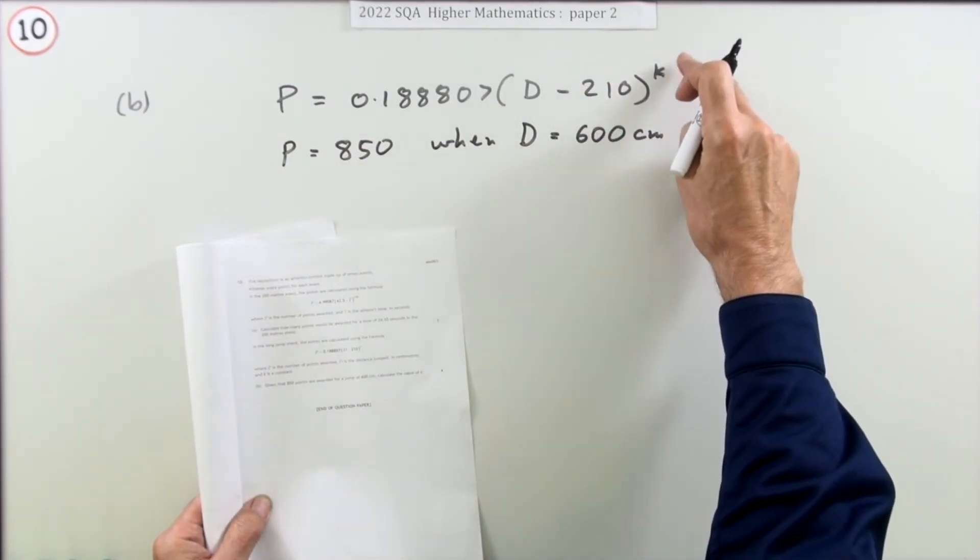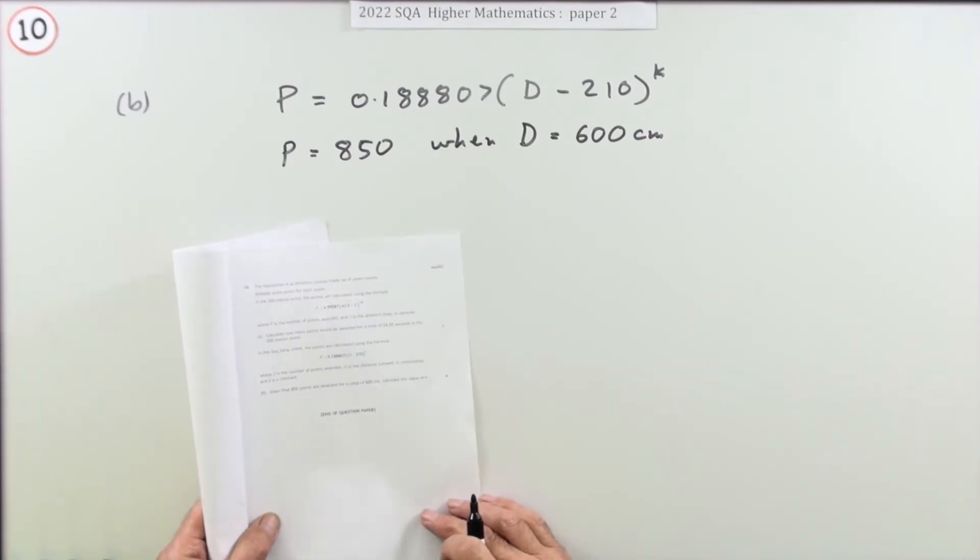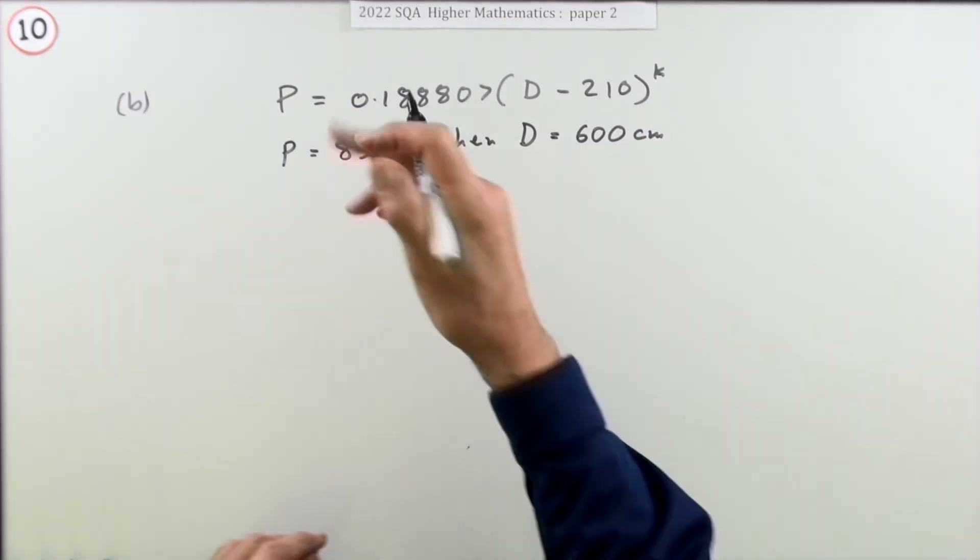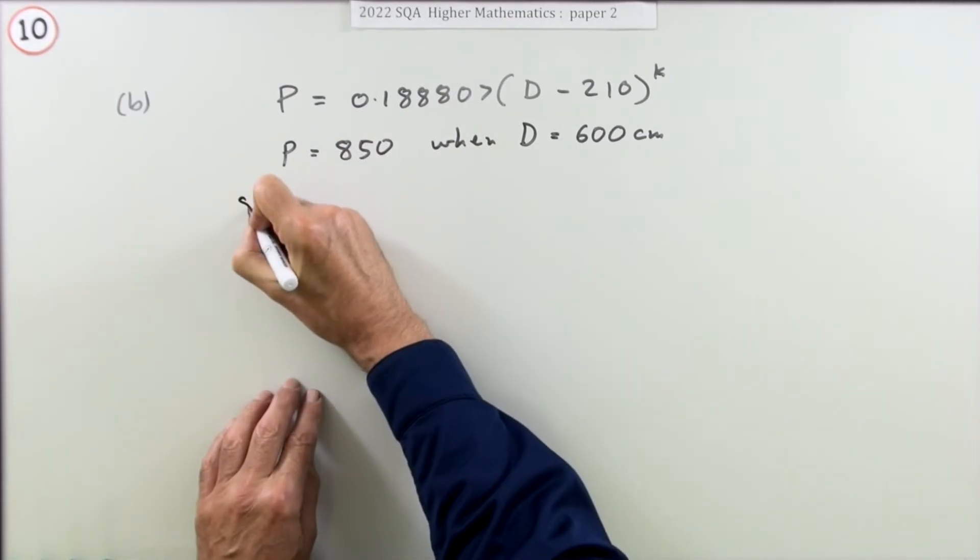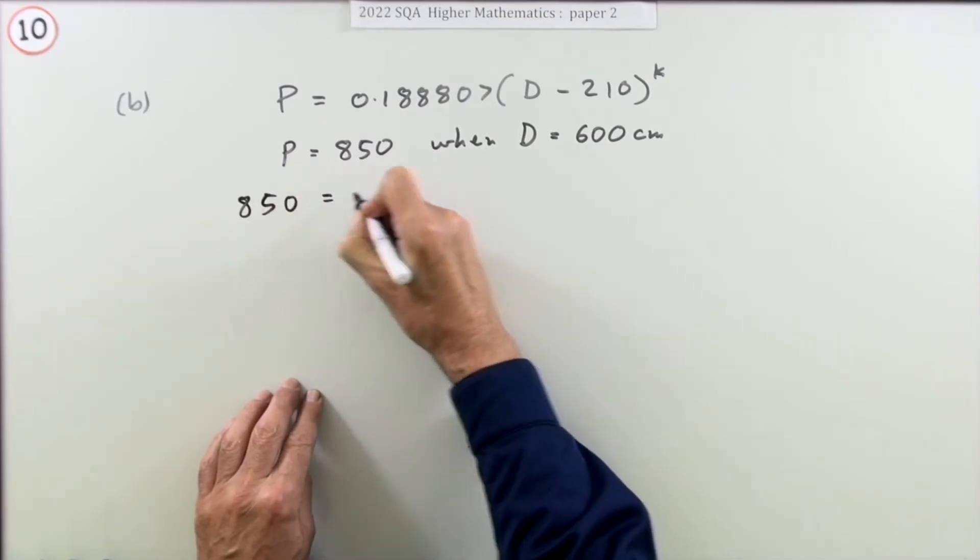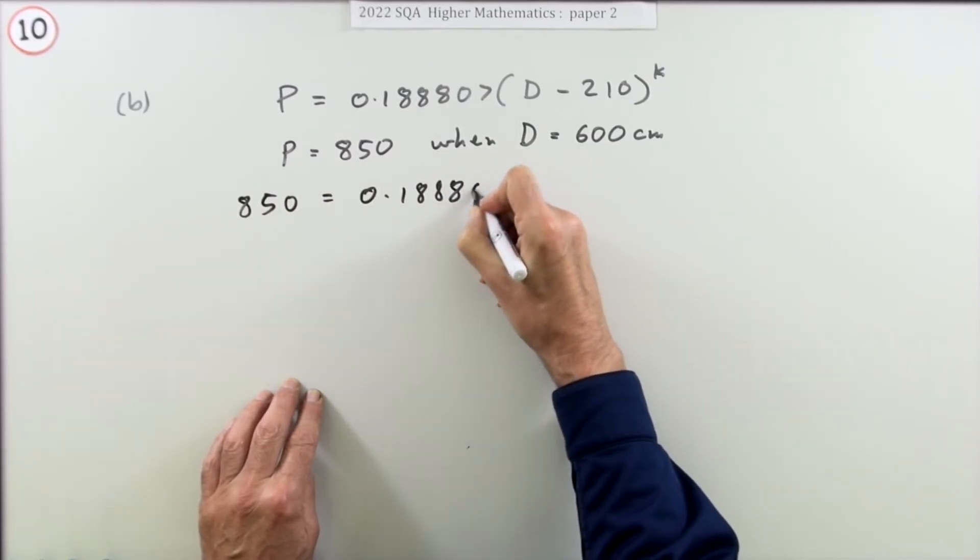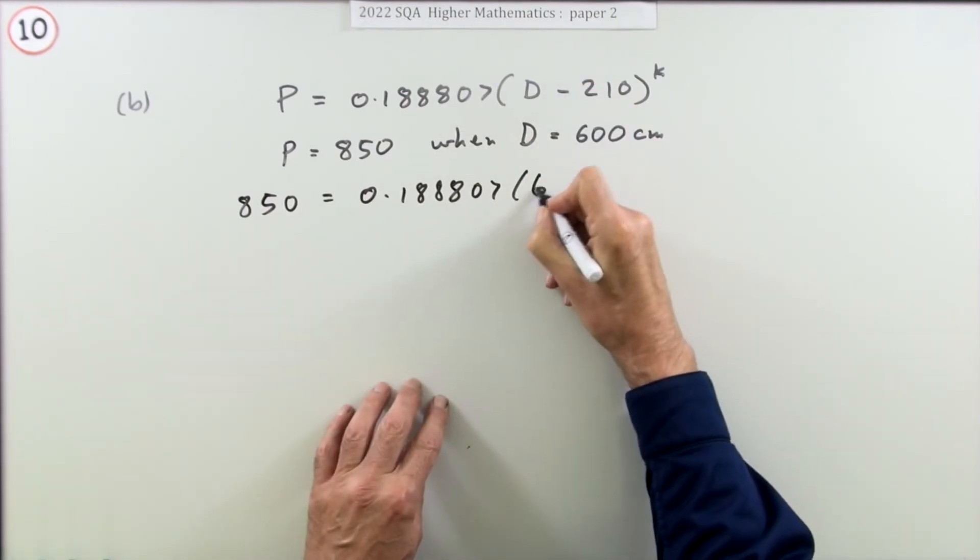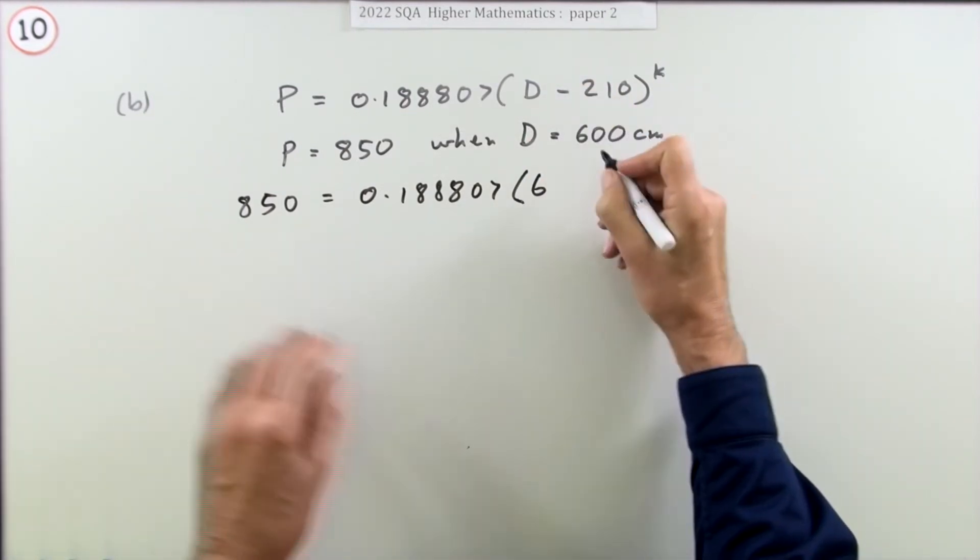Well, just substitute it in. You get 850 points when the distance is—and just check the units are the same, but they were—600 minus 210 to the power k.